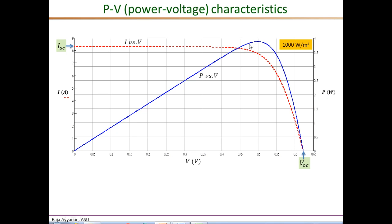Beyond that point the power increase is no longer linear but rises at a smaller rate, and somewhere around the peak the power reaches its maximum value. Beyond this point the decrease in current is so rapid that, even with increasing voltage, the power actually comes down, and it reaches zero at the open circuit voltage VOC where by definition the current is zero.